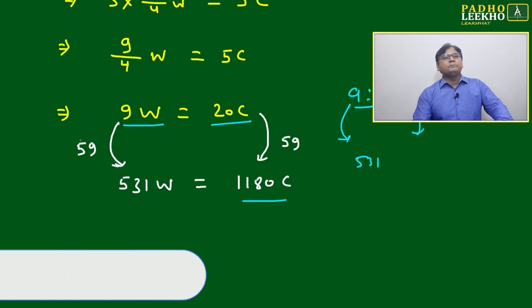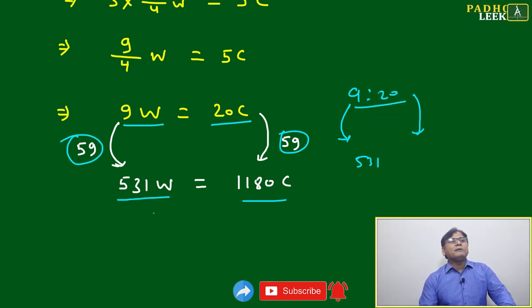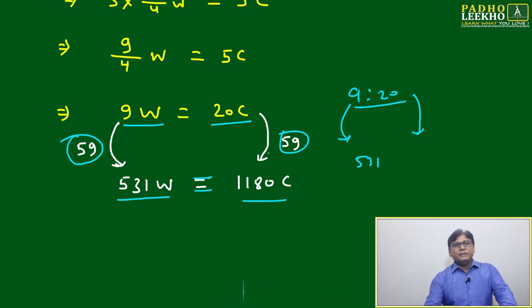But we have to keep the same factor of multiplication. Nine will multiply by 59 to become 531, then 20 also we have to multiply with 59 to keep it equal.